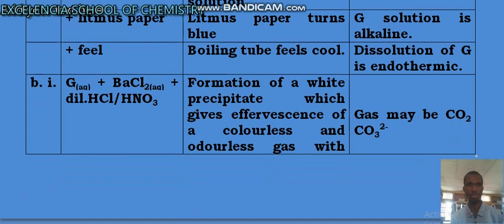Bi: G aqueous plus barium chloride plus dilute mineral acid, I mean dilute HCl or HNO₃, there is formation of white precipitate which gives effervescence of a colorless and odorless gas.